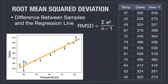The root mean square deviation is the measure of the differences between sample points and the regression line. We are using all of these formulas just to reinforce this and to better understand how well our linear regression equation is estimating our data. So we find the residual for each data point.